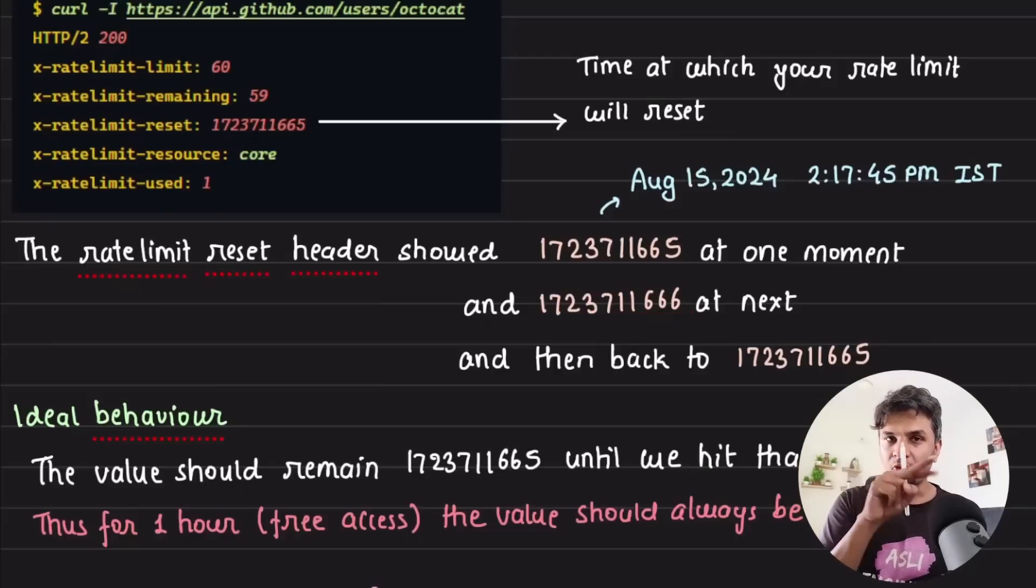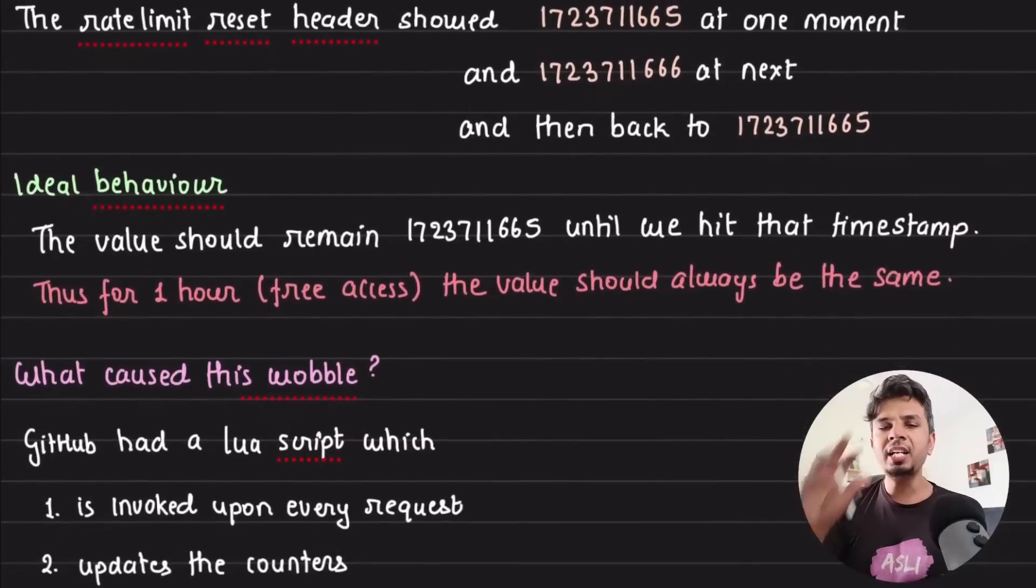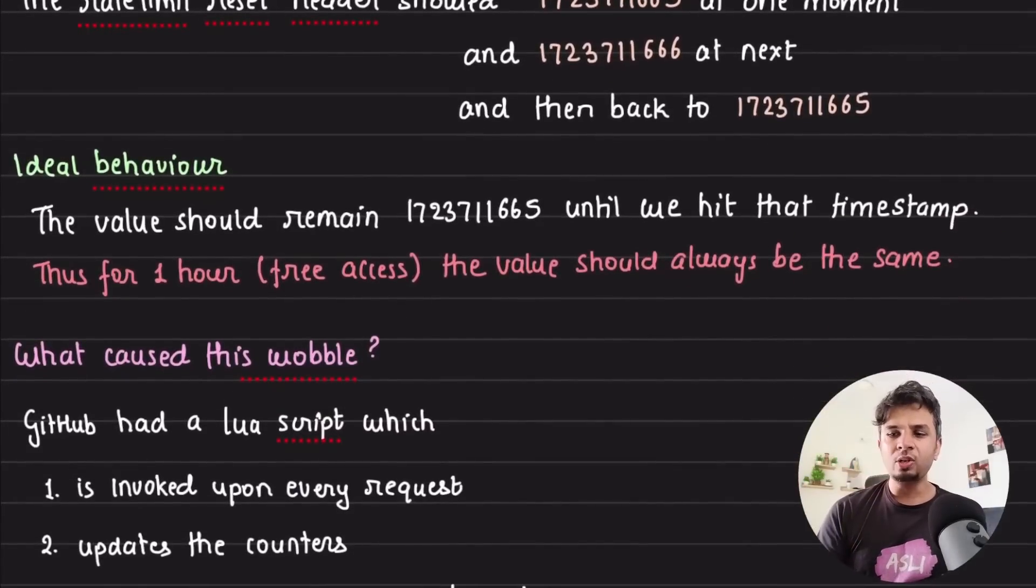So this wobbling is what concerned a few of GitHub's heavy users because they were relying on this header to do certain operations. They documented the error, shared it with the GitHub team, and the GitHub team started investigating the issue.